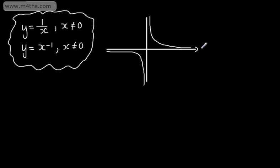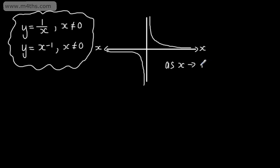If we consider the x-axis, as x gets very large — either positive or negative — we can say: as x tends to either positive or negative infinity, y will tend to 0.